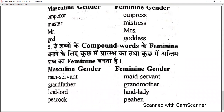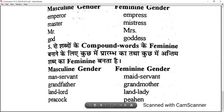Rule 5 — for compound words made of two words, to form the feminine you change either the first or the last word. For example: manservant — change the beginning word — becomes maidservant. Grandfather — change the last word — becomes grandmother. Landlord becomes landlady. Peacock becomes peahen.